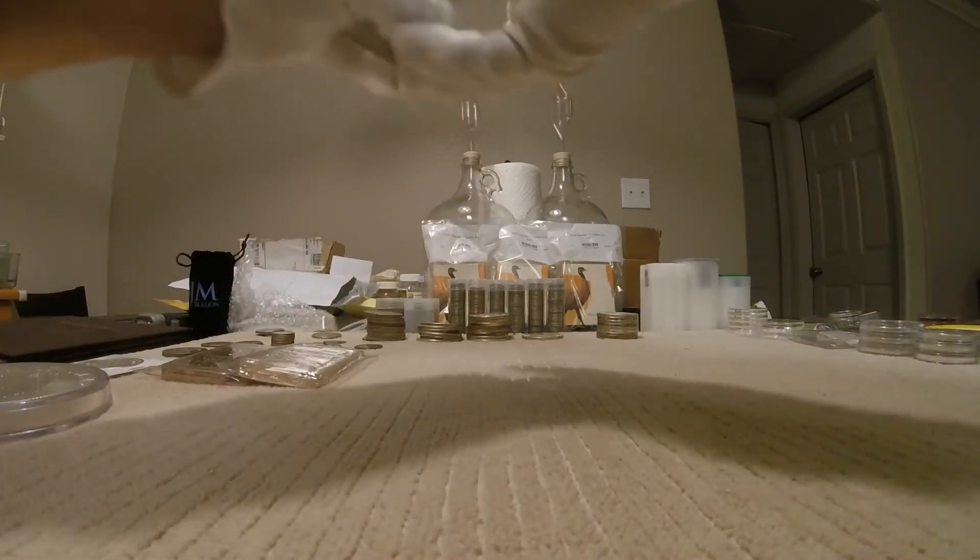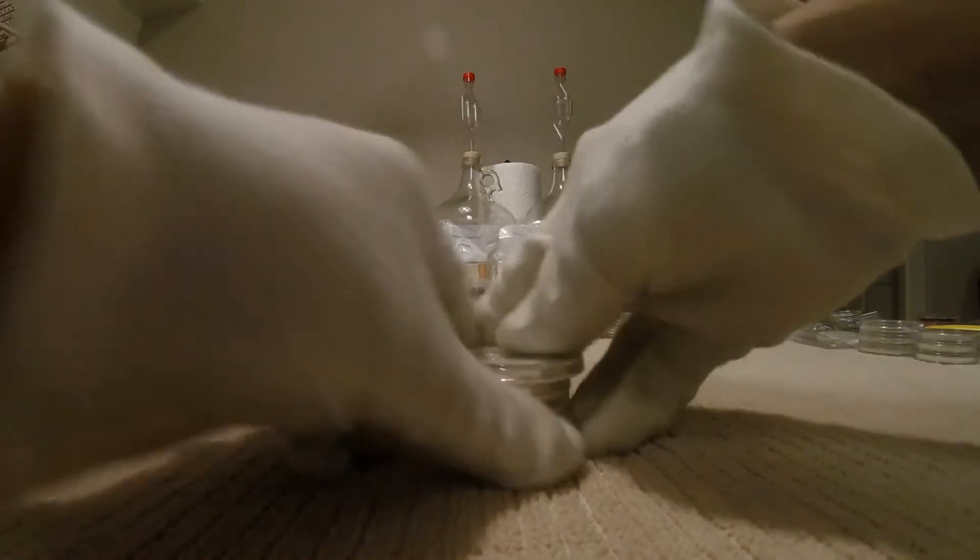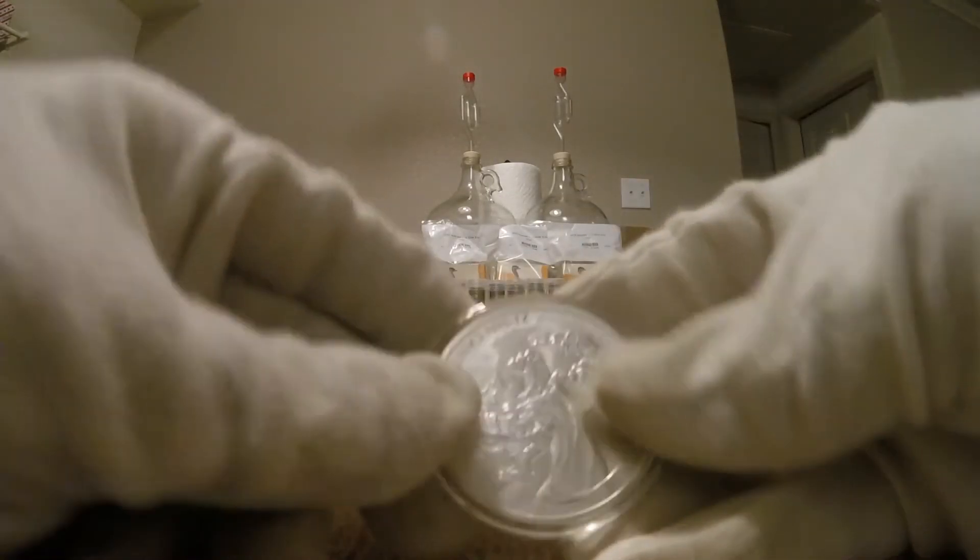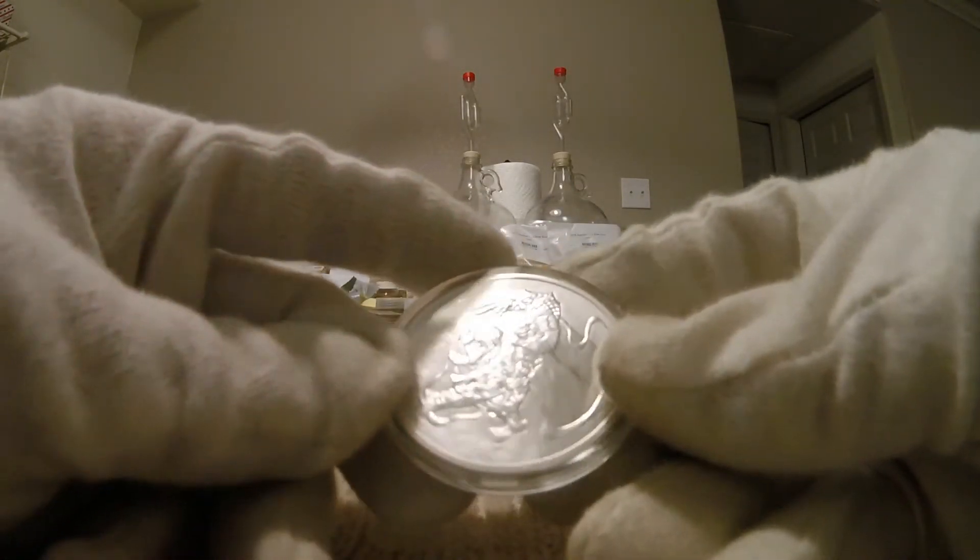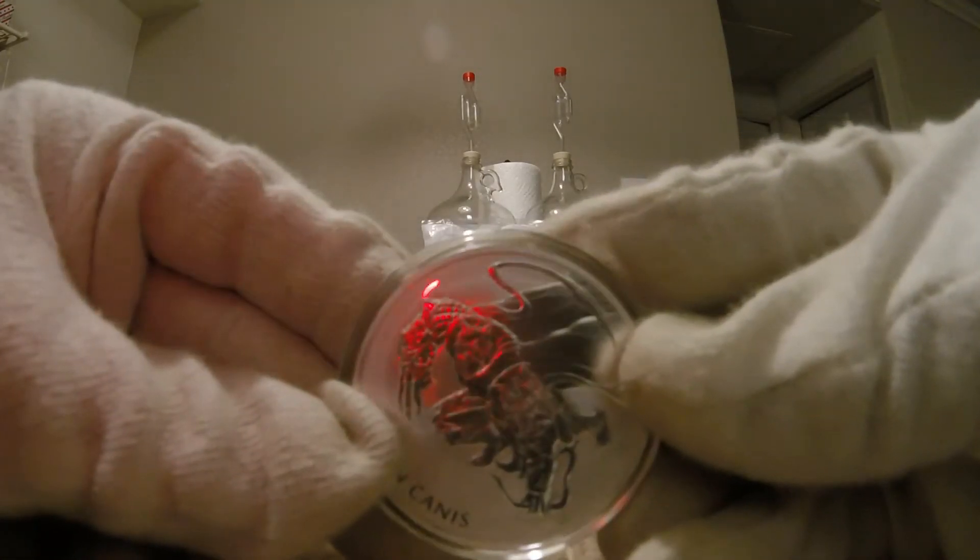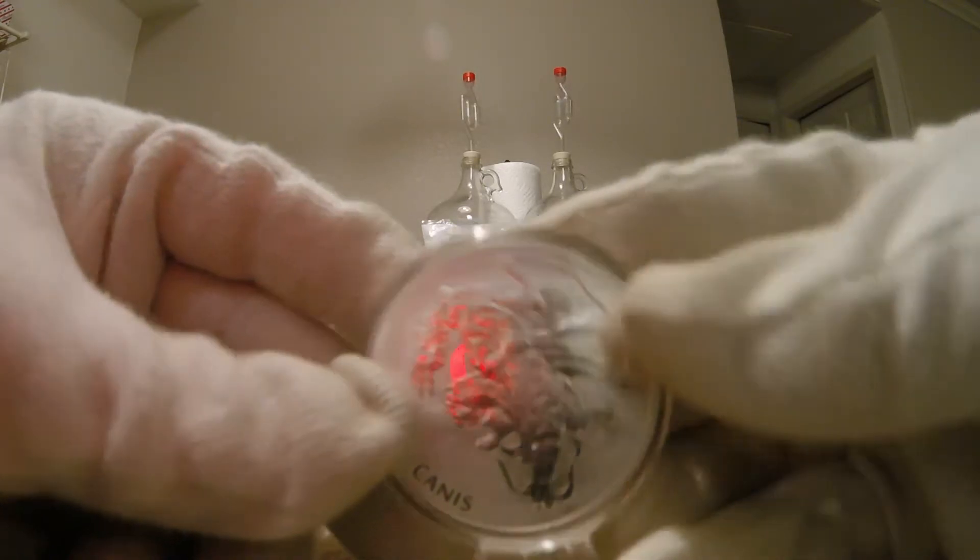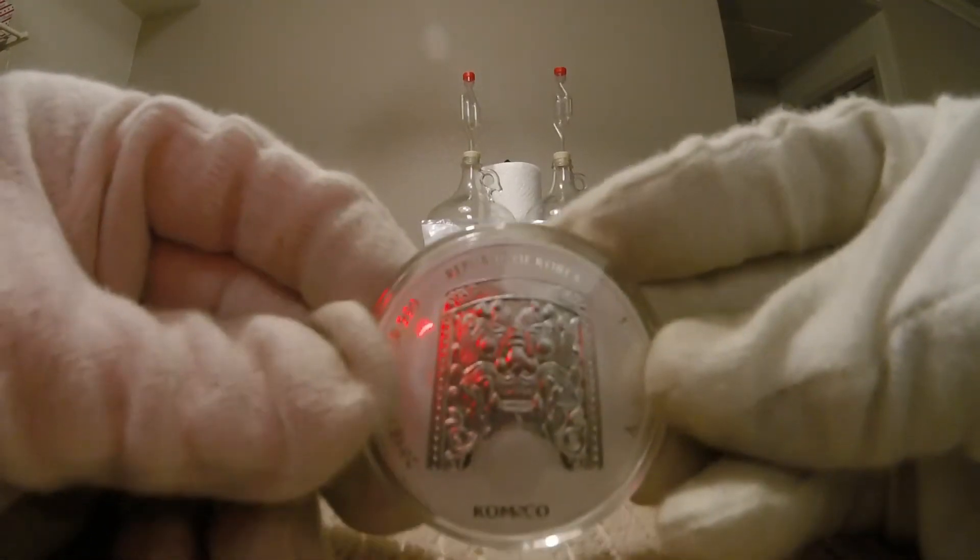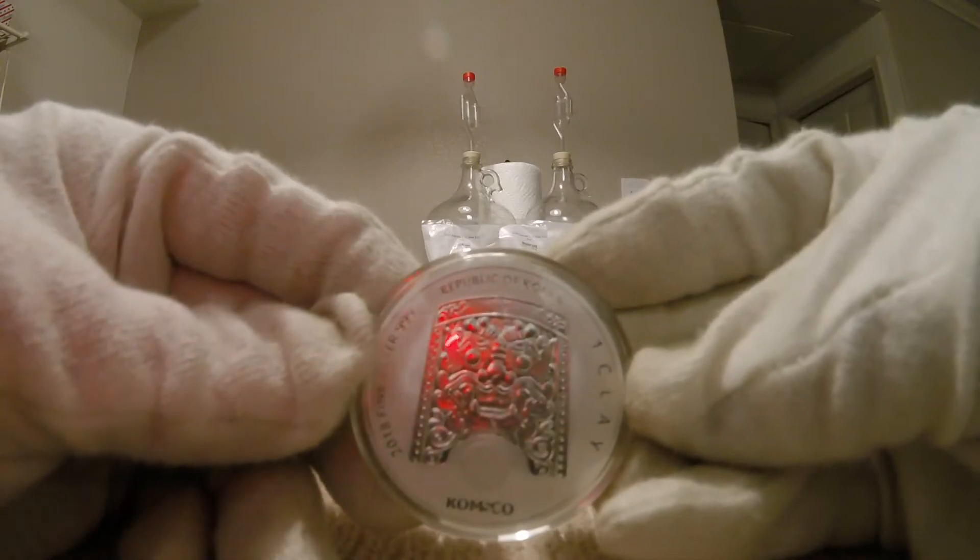Going on to the newer stuff. Obviously, I already showed you the 10 ounce unicorn. This goes back a while. This is the Chiwoo. I picked up five to add to my army. Five of these. Republic of Korea. One clay. Very good.